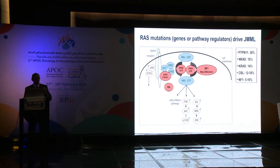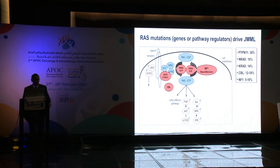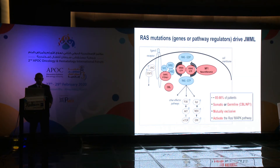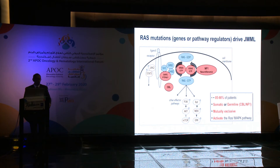The five most commonly detected genes in RAS mutations and pathway regulators include NRAS, KRAS, PTPN11, CBL gene mutation, and the tumor suppressor gene neurofibromin. These five genes are present in 85–90% of patients; some mutations are somatic and some are germline, such as CBL and neurofibromatosis type 1. They are mutually exclusive, so the presence of one mutation is enough to diagnose and exclude others, and all lead to activation of the RAS regulatory pathway.